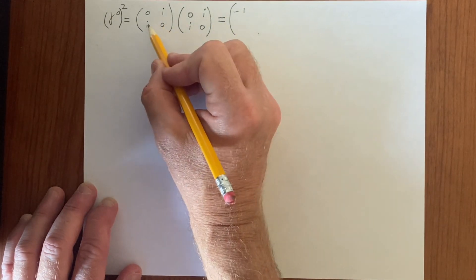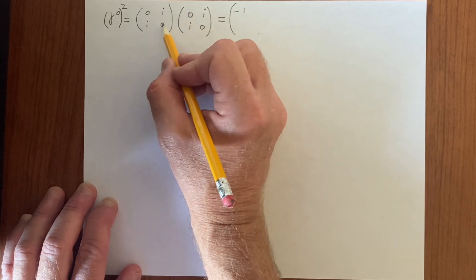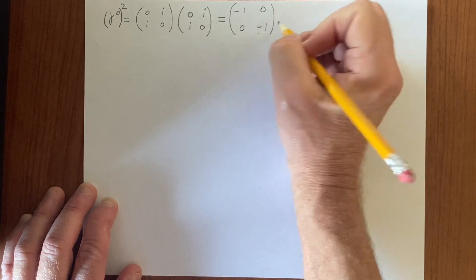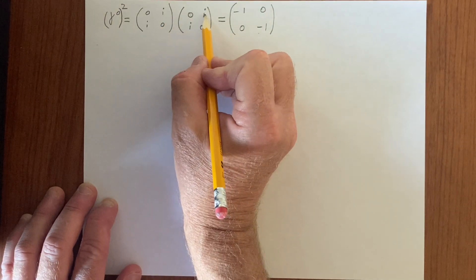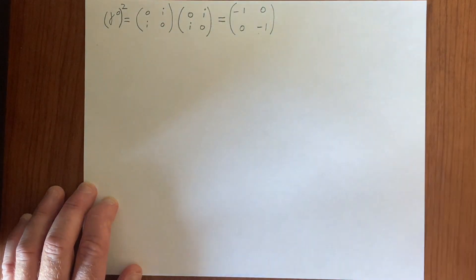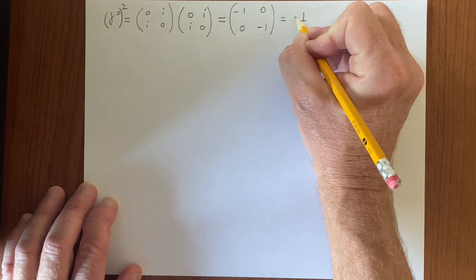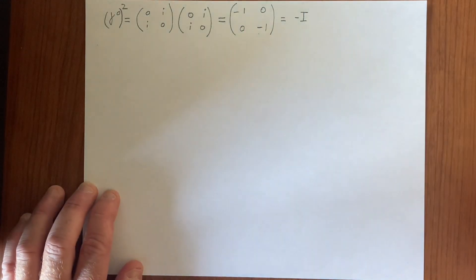Here we have i times 0 plus 0 times i, 0. Here we get 0, and here we get minus 1, because we have i times i plus 0 times 0. So again, we get minus the identity matrix.